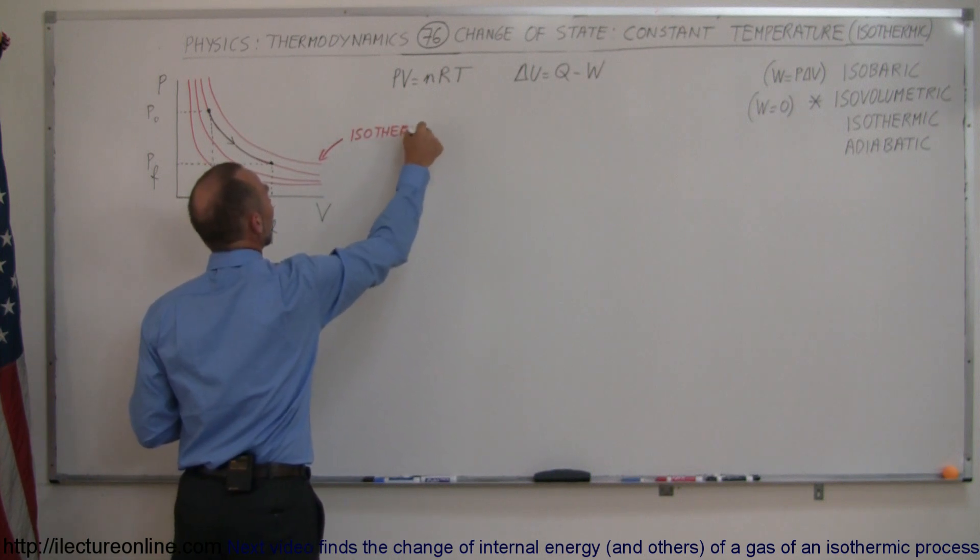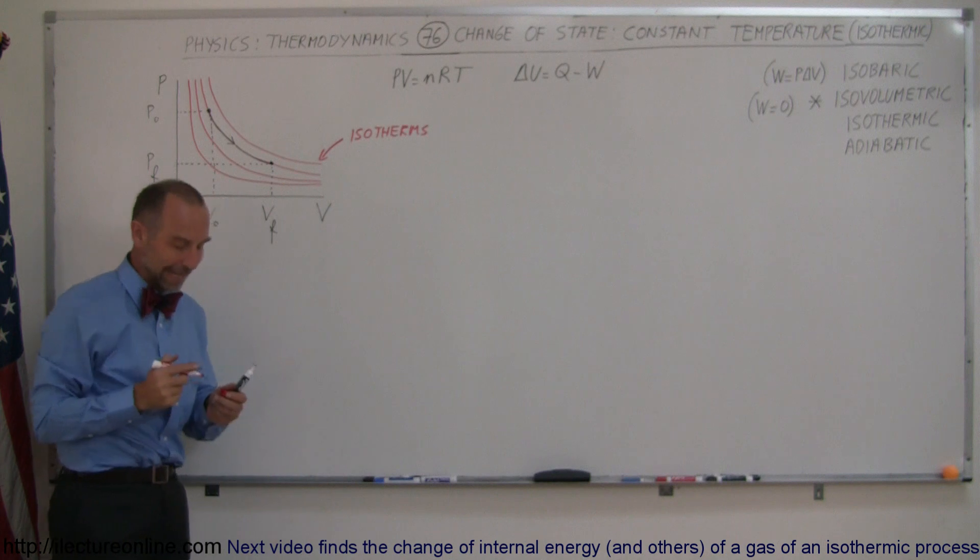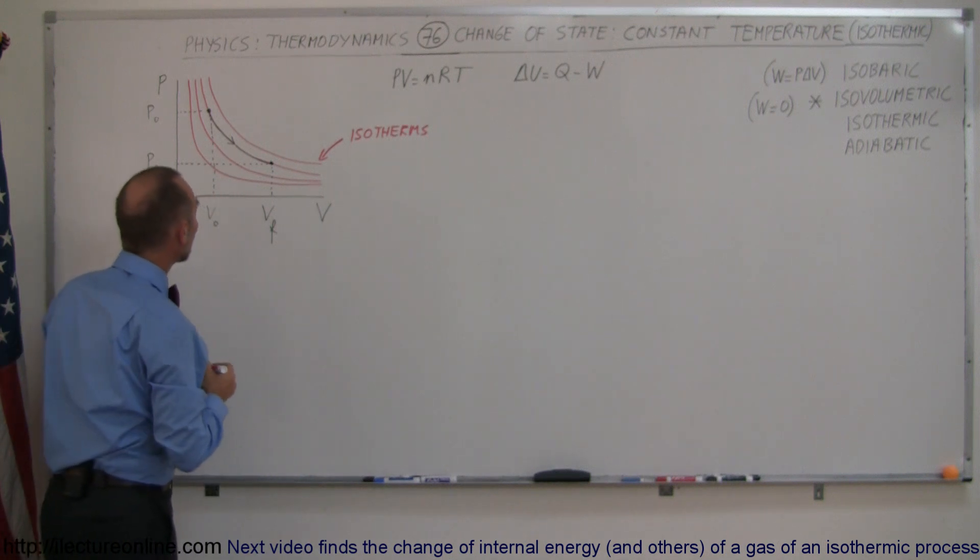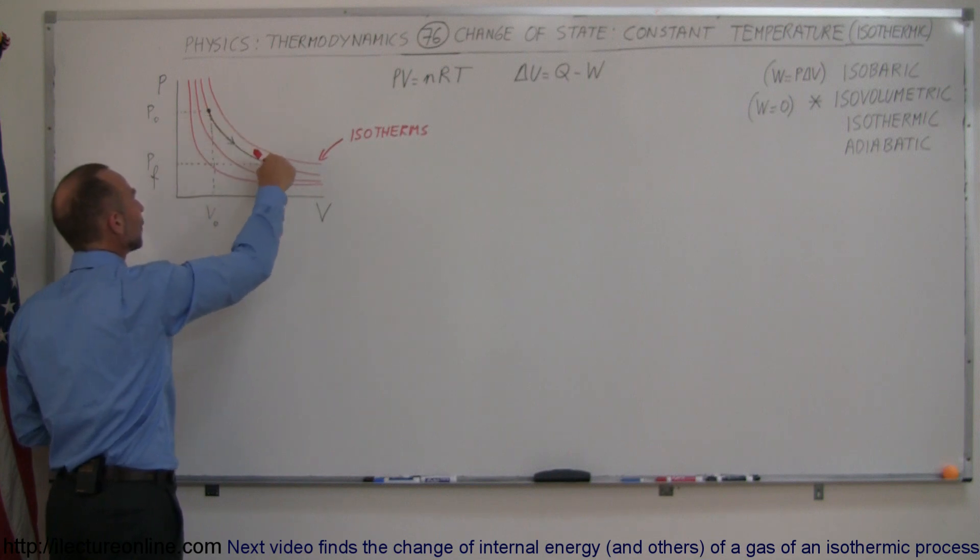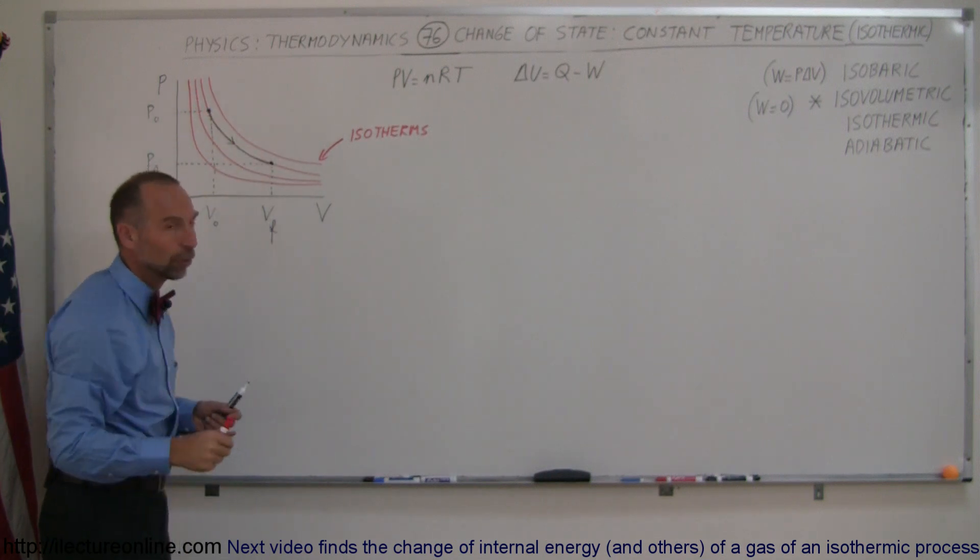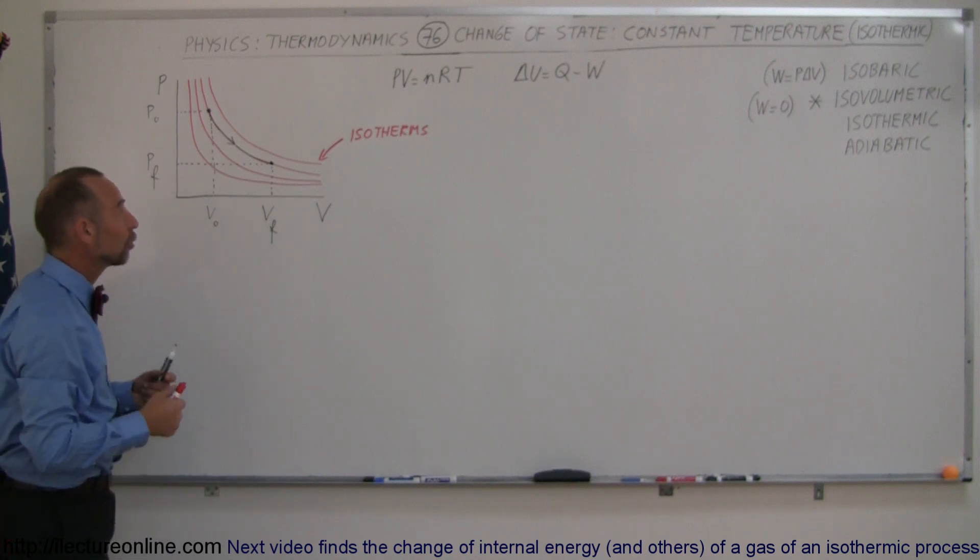These are lines that represent the same temperature in the gas. Notice that if the gas starts over here as the initial state and then ends up over there as the final state, and as it changes follows one of those isotherms, that means it becomes an isothermic process.